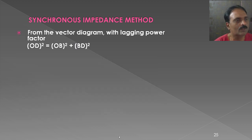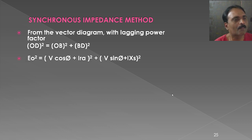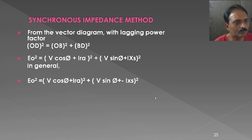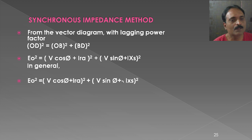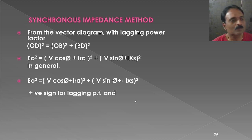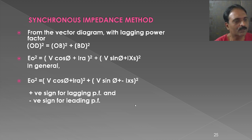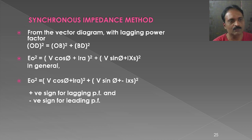This formula is for inductive load, where we use a plus sign: E0 = √[(V×cos(phi) + I×RA)² + (V×sin(phi) + I×XS)²]. For capacitive load, we use a minus sign: the second term becomes (V×sin(phi) − I×XS)². In general, the positive sign is for lagging power factor and the negative sign is for leading power factor. From this formula, we find E0, then calculate regulation as (E0 − V) / V × 100. This is how we find regulation using the synchronous impedance method.